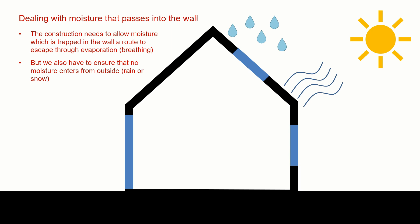The construction needs to allow the moisture that's in the wall to be able to escape out of the wall through evaporation and breathing. But we also have to ensure that no new moisture from the outside in the form of rain or snow can enter the building. So there is a balance between allowing the building to breathe outwards to the outside under the power of the sun for evaporation and stopping new moisture getting in. So we need to install something that can do that for us.